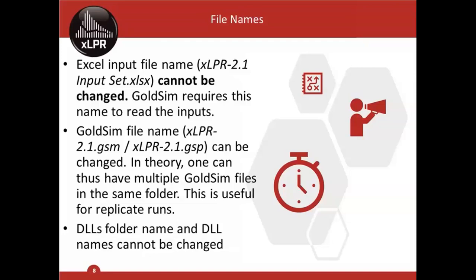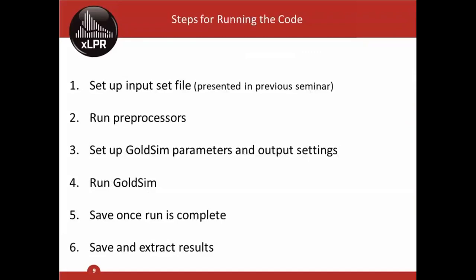The Excel input file name — XLPR-2.1 Input Set.xlsx — cannot be changed because GoldSim requires this name to read the input. However, the GoldSim file name itself can be changed for both the pro and player versions. You can also have multiple GoldSim files in the same folder; they will read the same Excel file. This is useful for replicate runs with different random seeds — for example, running 10,000 realizations five times to get 50,000 total. The DLL folder name and DLL names cannot be changed.